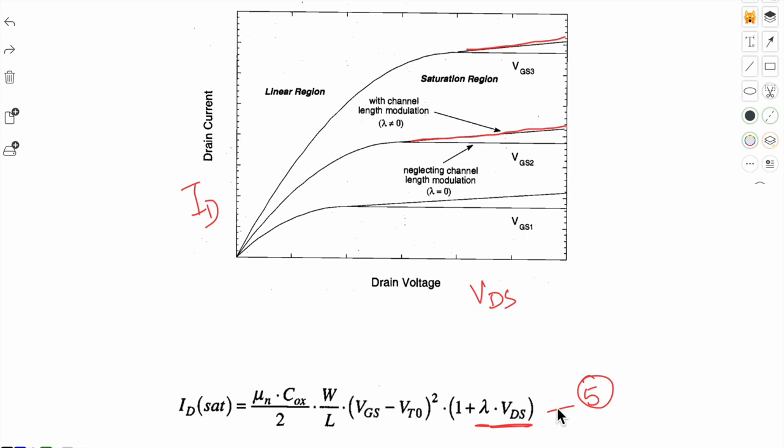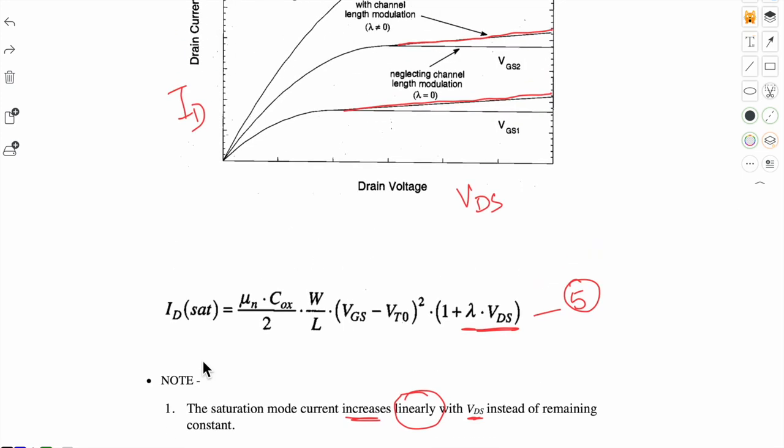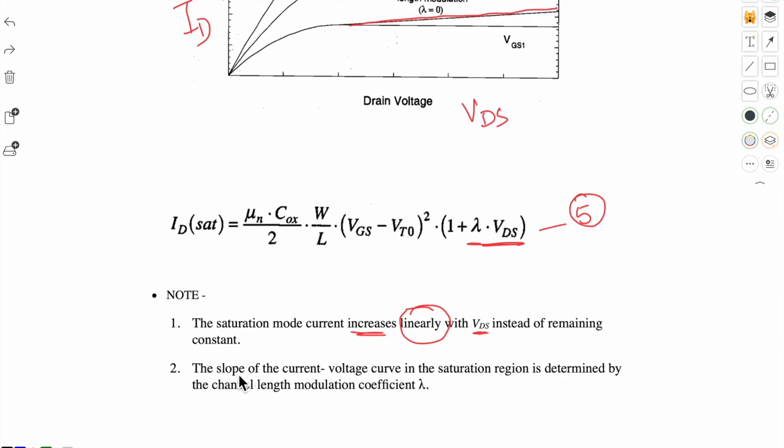We can note down that saturation mode current increases linearly with VDS instead of remaining constant. And the slope of this IV curve in the saturation region is determined by channel length modulation coefficient lambda.